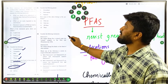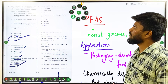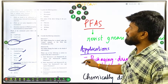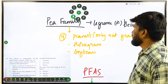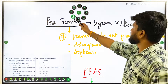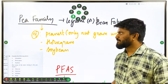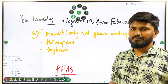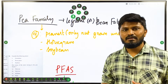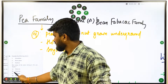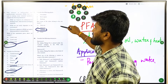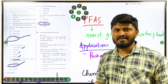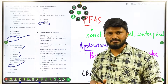Question 19 asks: among groundnut, horse gram, and soya bean, how many belong to the pea family? The pea family is also called the legume or Fabaceae family. Examples include peanut, horse gram, and soya bean — so all three belong to the pea family. Interestingly, peanut is the only nut that grows underground. The correct answer is C — all three. You can guess this since all of them look like nuts and are more likely to belong to the pea family.